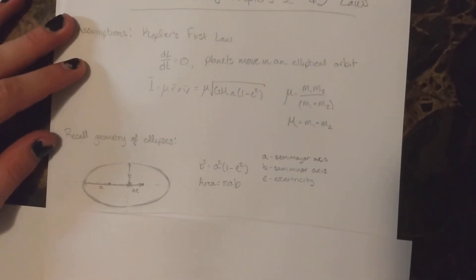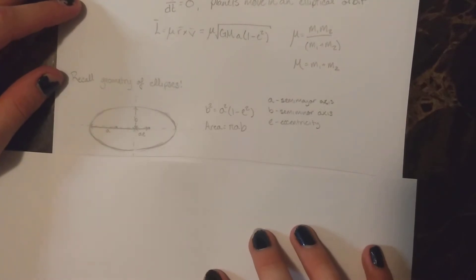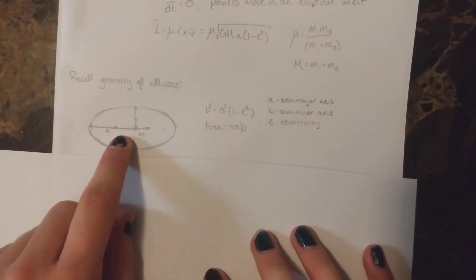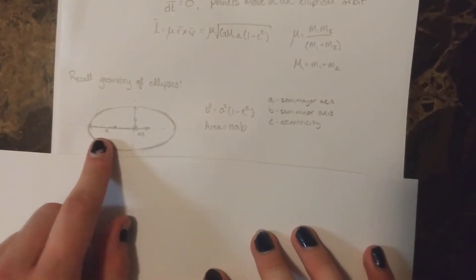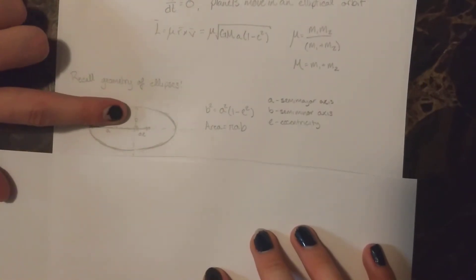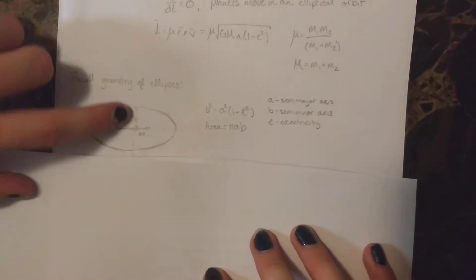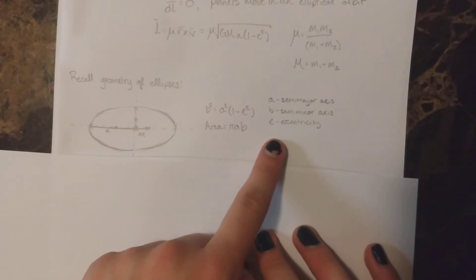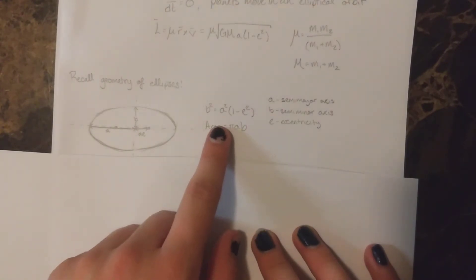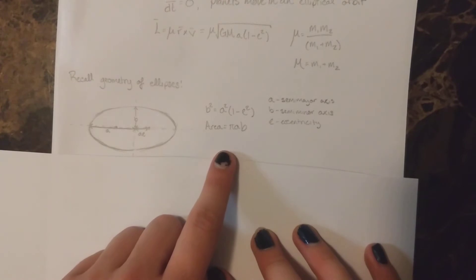So let us also look at some geometry of ellipses. We can see here this A is the semi-major axis, and B is the semi-minor axis. And the eccentricity E is related to the two in that fashion. The area of this ellipse is equal to pi times A times B.